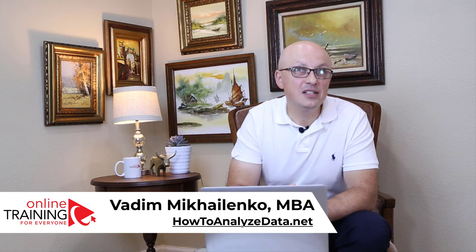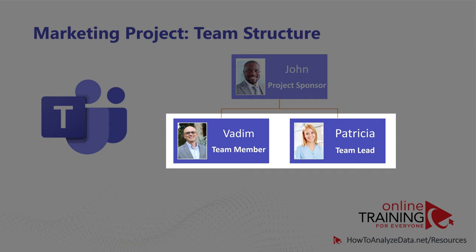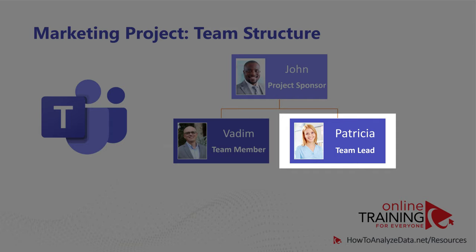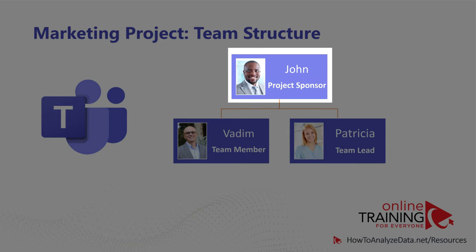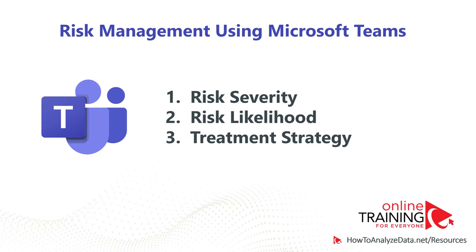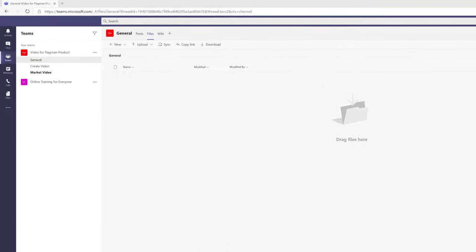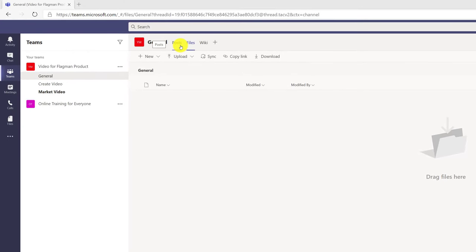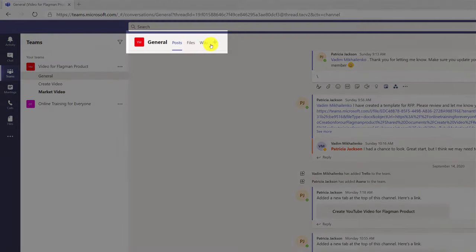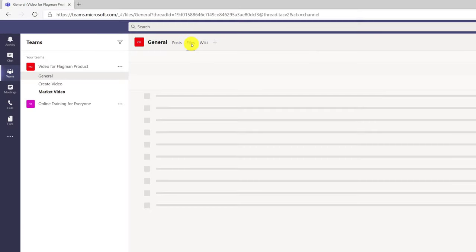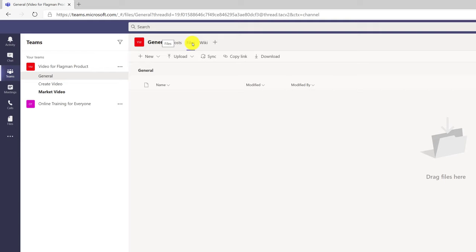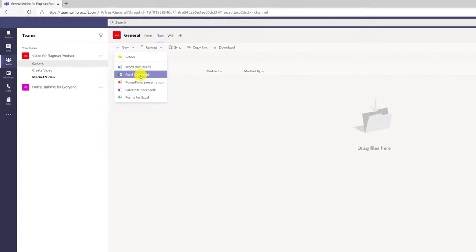Patricia and I are working on the marketing project for our Flagman product. Patricia is team lead and plays the role of project manager — we're peers and both report to John. John suggested we look at the risks associated with our project execution. He also suggested we create a risk register to track risk severity, risk likelihood, and our treatment strategy for each particular risk. Based on Patricia's research, the best way to create a risk register is to use the Files tab inside Microsoft Teams, creating a new Excel workbook.